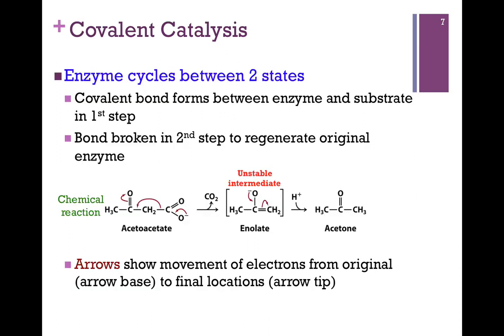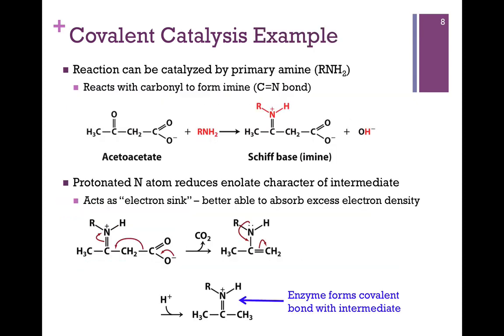Next we want to consider covalent catalysis. This is a case where the enzyme actually cycles between two states. In the first step, it actually forms a covalent bond with the substrate or a portion of the substrate. In the second step, it must break that bond because remember, we have to regenerate the original form of the enzyme. Here's a chemical reaction where we're converting acetoacetate through decarboxylation to acetone. And here's our unstable enolate intermediate, another carbanion. Just to remind you, the arrows simply show us the movement of electrons in the resolution of the structure. So the base of the arrow tells us where the electrons are coming from, and the tip tells us where they will go to, and the next step it shows us how it has resolved itself.